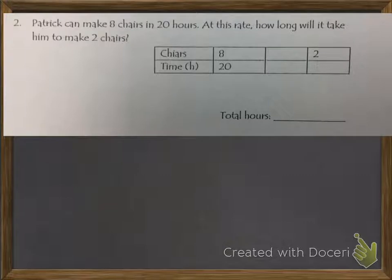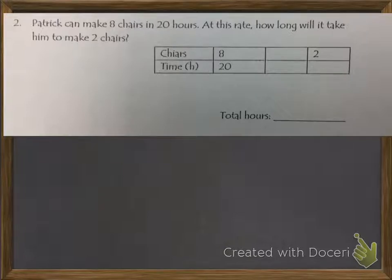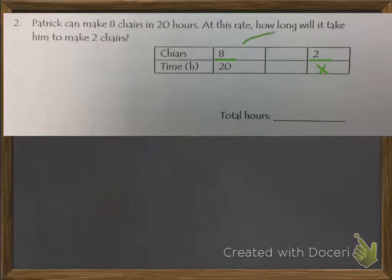So let's try this next one. Patrick can make 8 chairs in 20 hours. At this rate, how long will it take him to make 2 chairs? So again, we look and we want to see our fraction. Our fraction is 8 over 20, and we're looking for x. We've got to decide how do we get from 8 to 2.